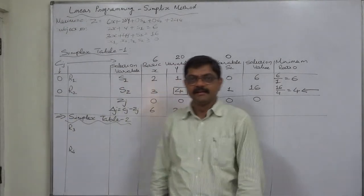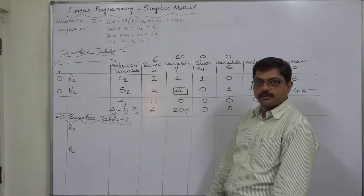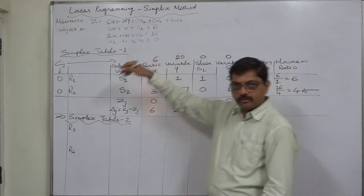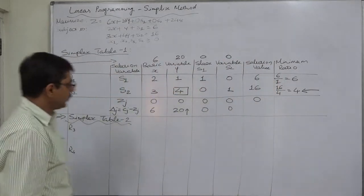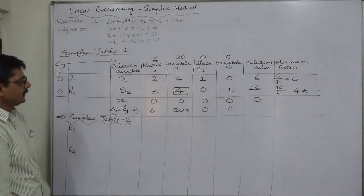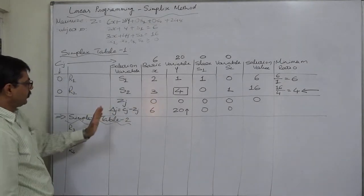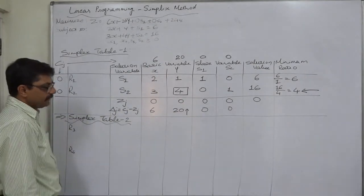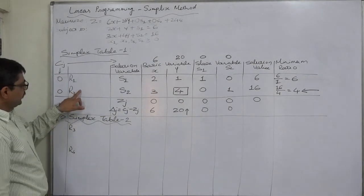Hello friends, welcome again. Now let us prepare simplex table 2 for the problem which we are trying to solve through simplex method. We have already prepared simplex table 1 in the earlier lecture. The row of r2 is key row, the column of y is key column, 4 is key element.